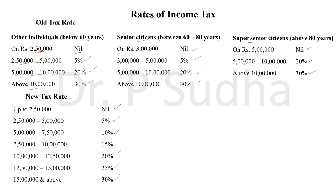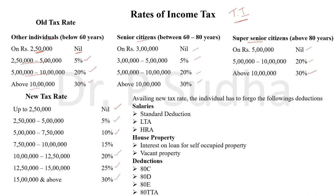What is different when calculating under the new tax rate is that the total income calculation will differ. The total income is calculated differently depending on whether you follow the old or new tax rate, and it is at the option of the taxpayer — he can choose either the old rate or the new rate. If he is going to follow the new tax rate, then certain deductions he cannot claim.